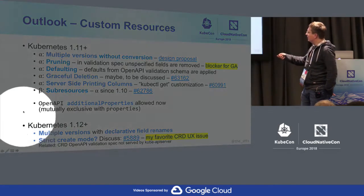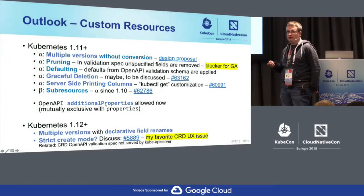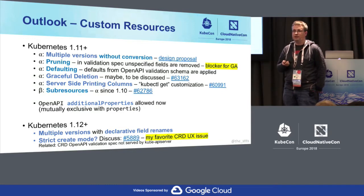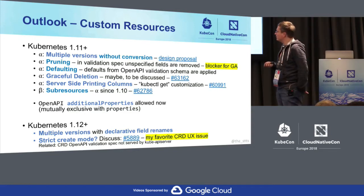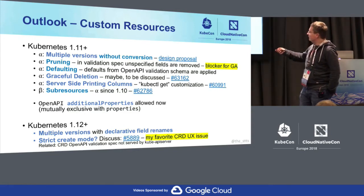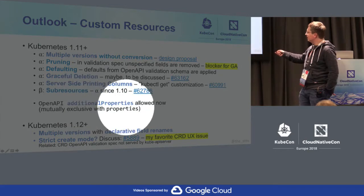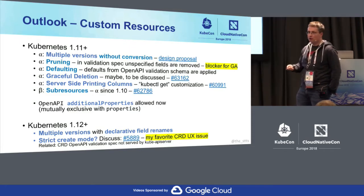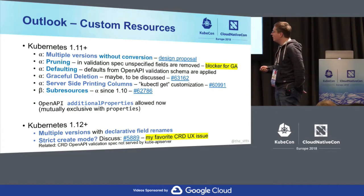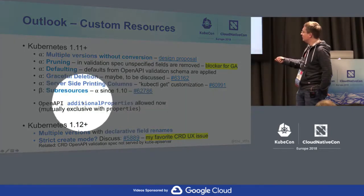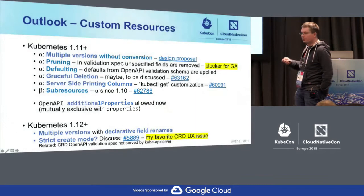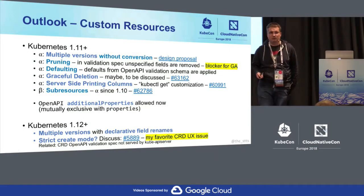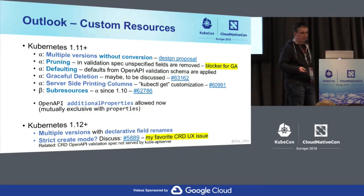We got a couple of people complaining about additional properties. Who's using validation already in CRDs? I think it's pretty cool and gives a good user experience. There was one feature about string-string maps — a map from string to string couldn't be expressed in 1.10. We add limited support for that. It cannot be used at the same time as properties, but it's the right thing for map string-string. If you have this use case for labels, that's your fix. It's already merged in 1.11.